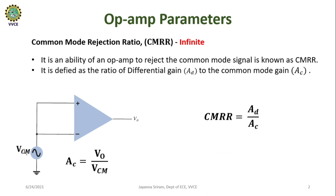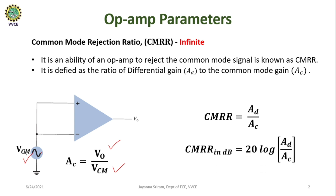CMRR is given by AD divided by AC, where AD is the differential gain, also called the open loop gain. AC refers to the common mode gain, which is equal to V0 divided by VCM, where V0 is the output of the op-amp and VCM represents the common mode input applied. CMRR can be expressed in decibel scale as 20 log of the modulus of AD divided by AC.